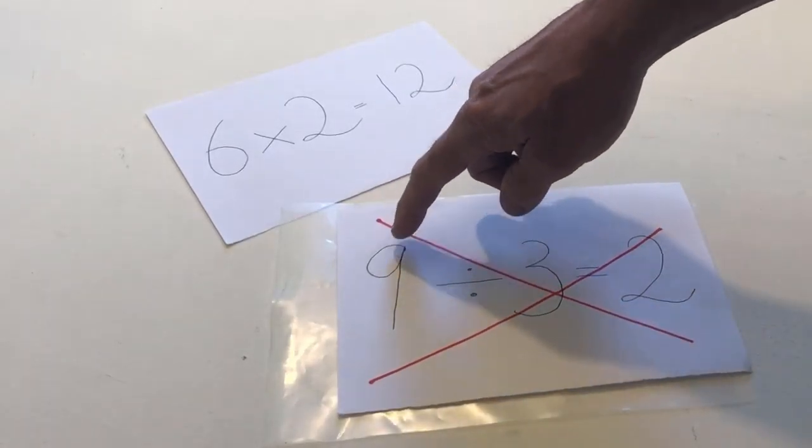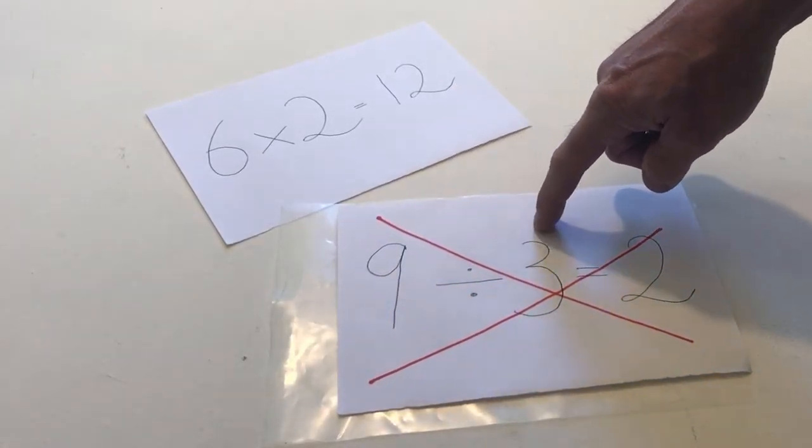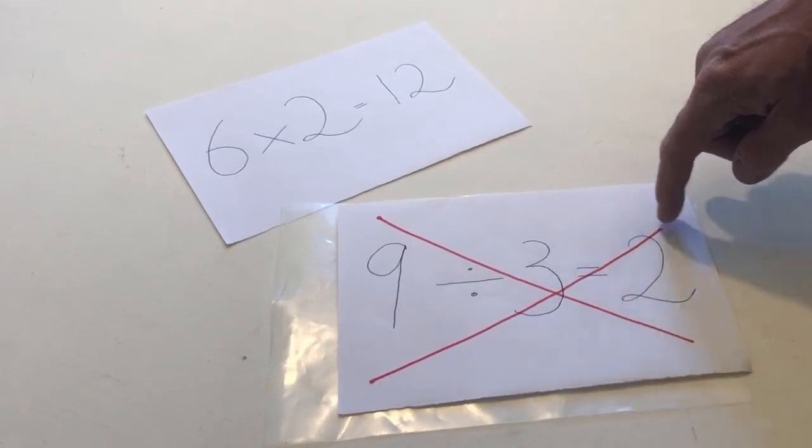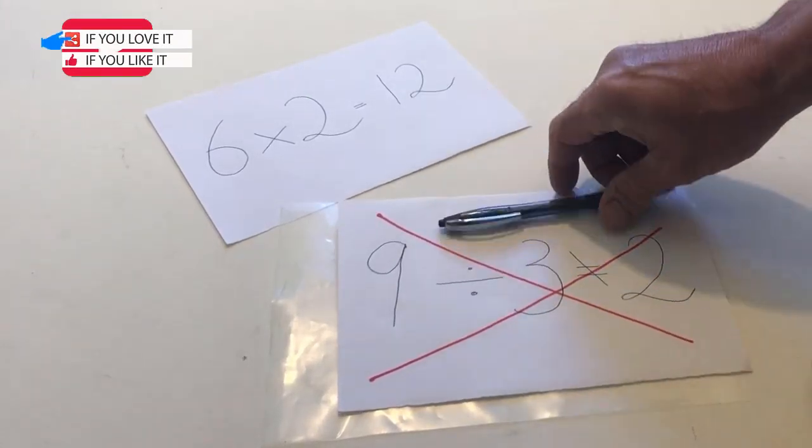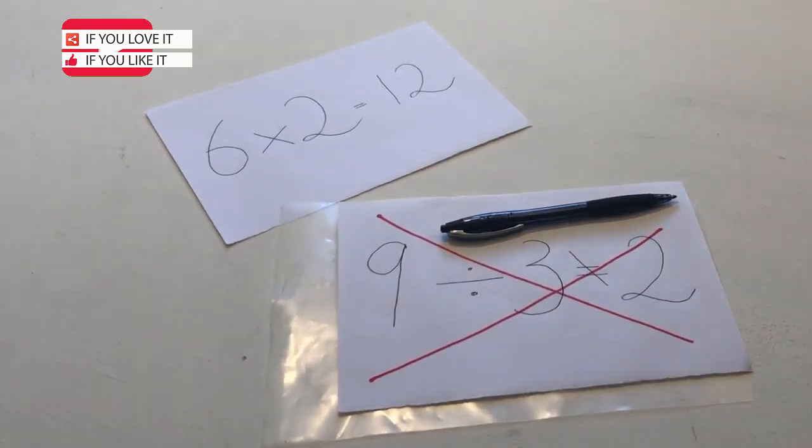9 divided by 3 does not equal 2. 9 divided by 3 equals 3.